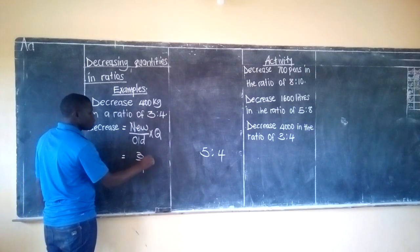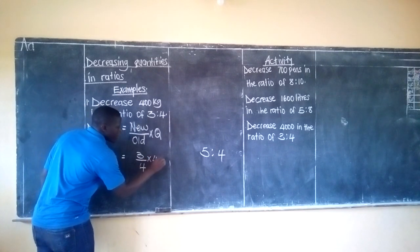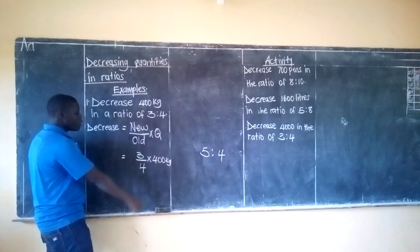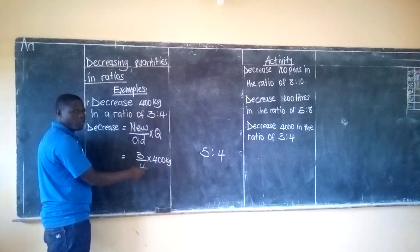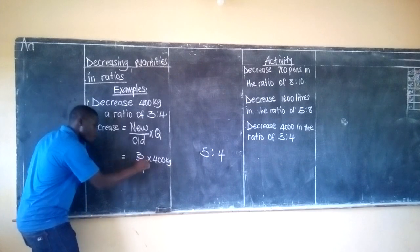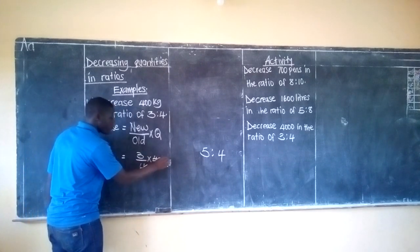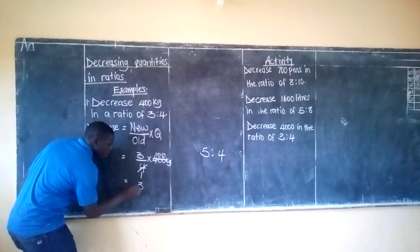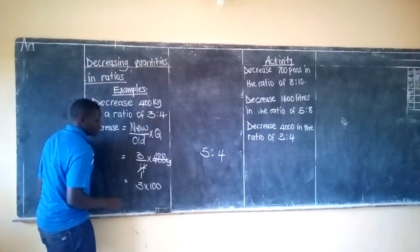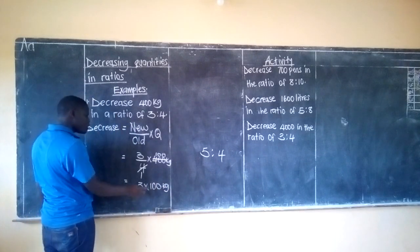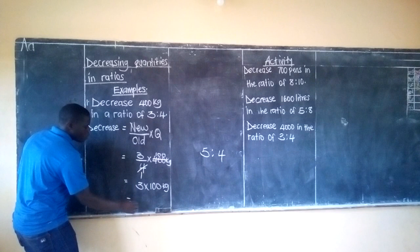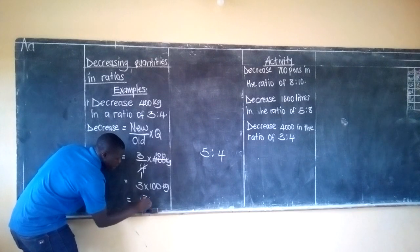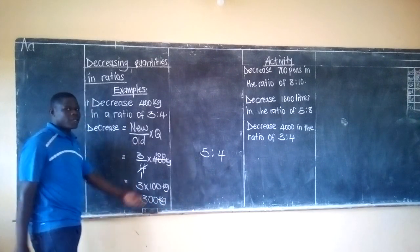So we have 3 out of 4, then we shall multiply this by 400. We shall divide by 4 — 4 divided by 4 gives you 1, and 400 divided by 4 gives you 100 kilograms. Then multiply 3 by 100 kilograms, which gives you 300 kilograms as the answer.